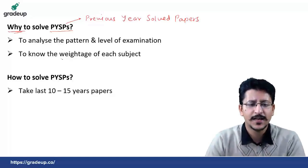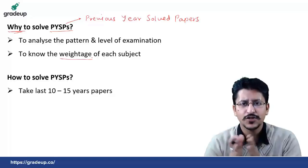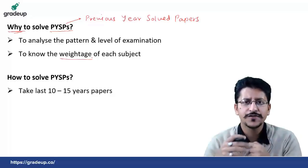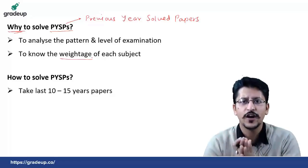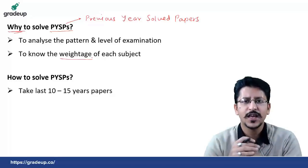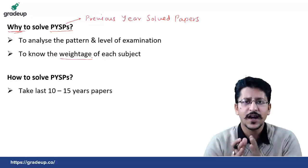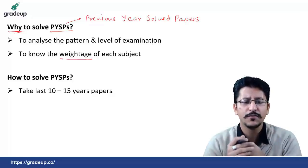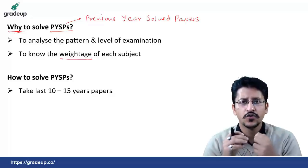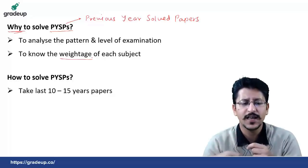Doosra important point hai — that is to know the weightage of each subject. Kyunki aapke B.Tech aur B.E. ke dauran aapne jo subjects padhe hain, there are a lot of subjects, but the weightage of each subject is defined by the gate authority for this examination. To is examination ke liye aapko kaun sa subject zyada padhna hai, kis subject mein, kis point par aapko zyada focus karna hai, kis point se question zyada aa rahe hain — wo sab aapko pata lagega jab aap solve karenge PYSPs. To why ke liye yeh do point hain: pattern aur level ka pata chalega, aur weightage ka pata lagega ki kis subject ka kitna weightage hai.